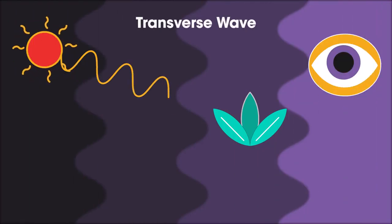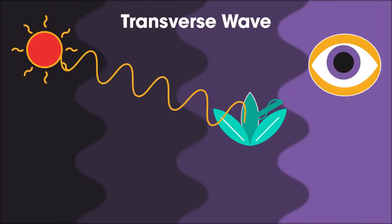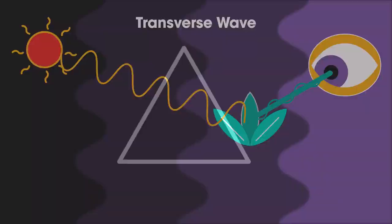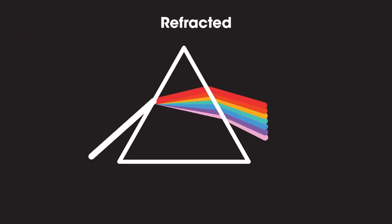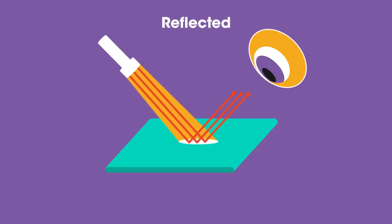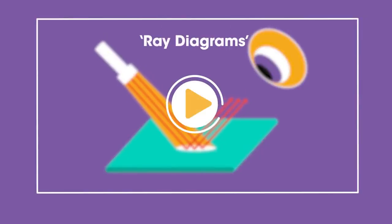Light is a form of radiation that travels as a transverse wave. Light behaves in various ways—it can be refracted and reflected. For more on this, see our video on ray diagrams.